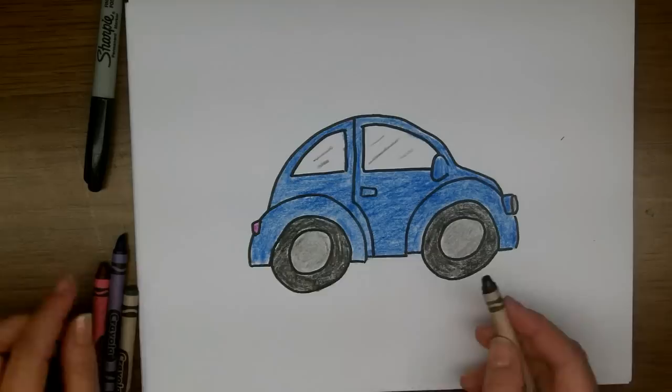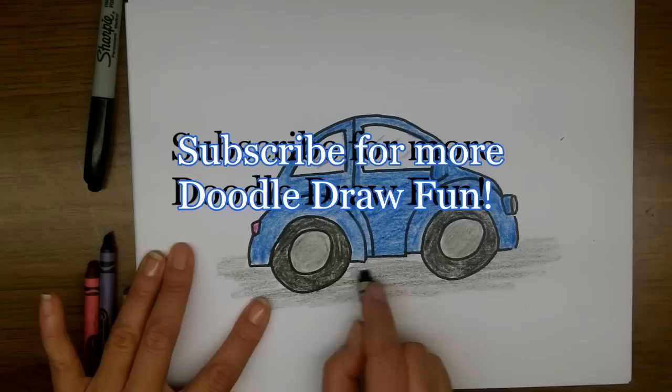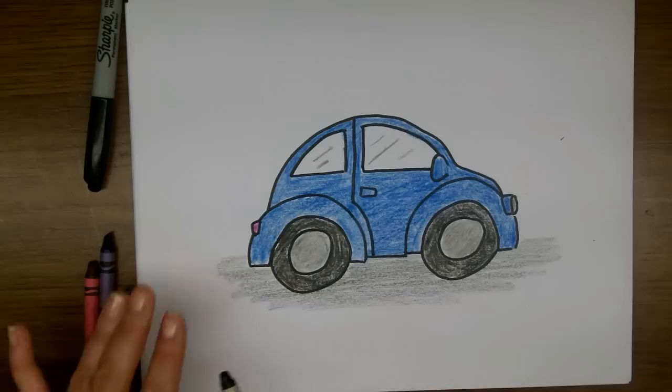And some shadows underneath to show that we're driving on asphalt. I'm using a black pencil. So that's it. Here's our punch buggy blue or our slug bug.